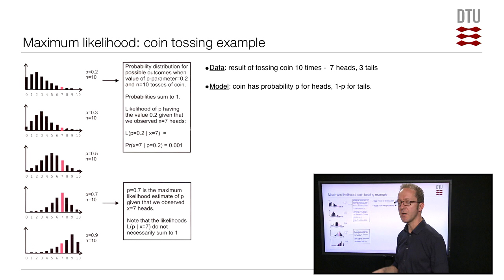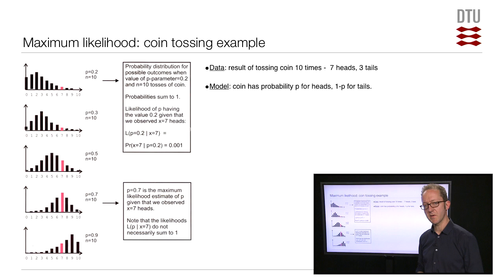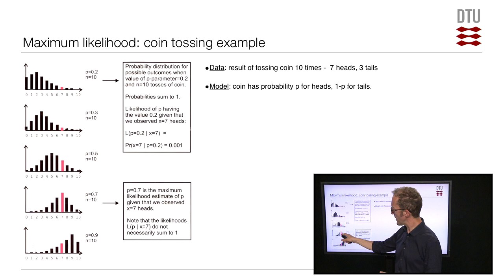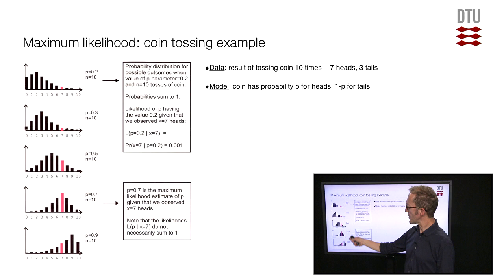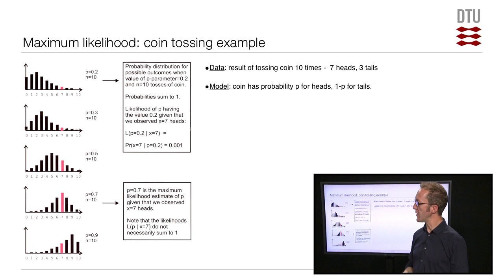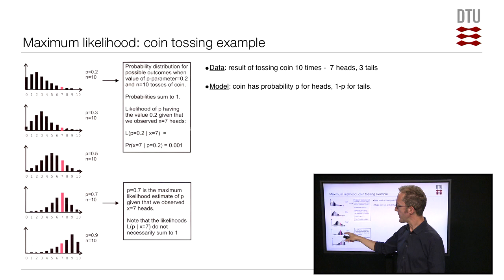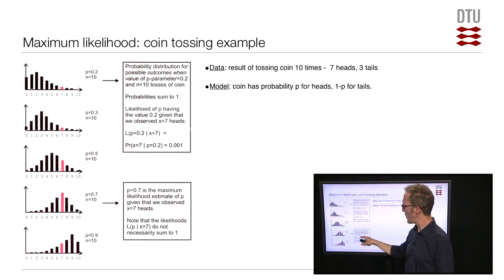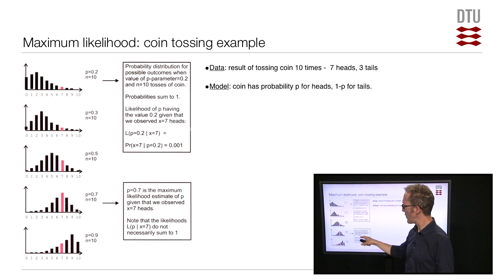Trying p equals 0.5, the distribution shifts further and the probability of 7 heads is significantly larger. With p equals 0.7, the probability of 7 heads is really quite a bit better than at any previous point. Trying p equals 0.9, the distribution shifts further but the probability of 7 heads drops again. If we were to try millions of possible values for p, we would never find a better value than 0.7 — this is the parameter value that maximizes the likelihood, and is therefore the maximum likelihood estimate of p.